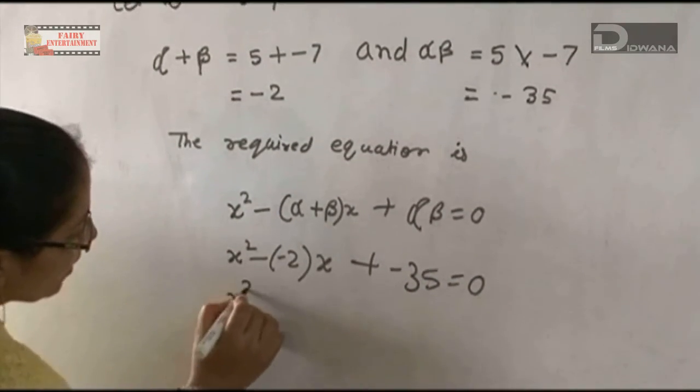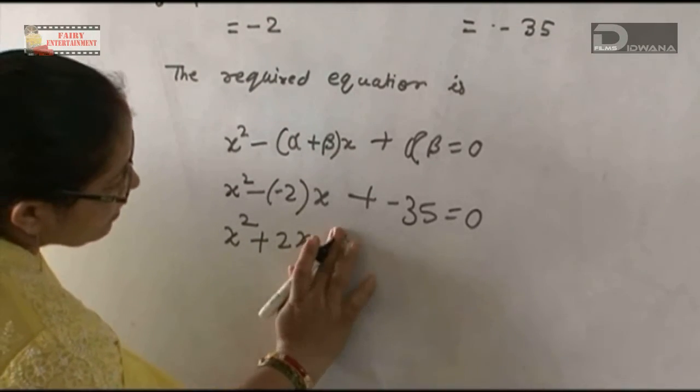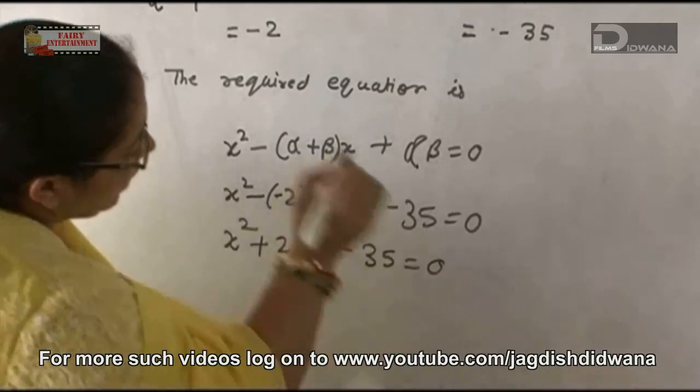Then, x² minus (-2)x becomes x² + 2x. The complete equation is x² + 2x - 35 = 0. This is our equation.